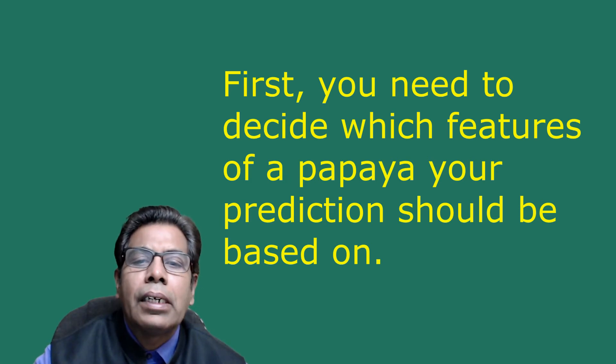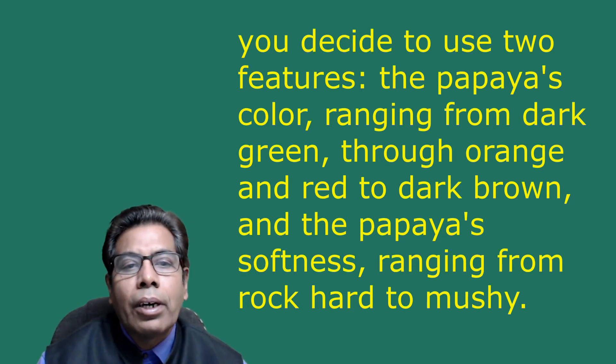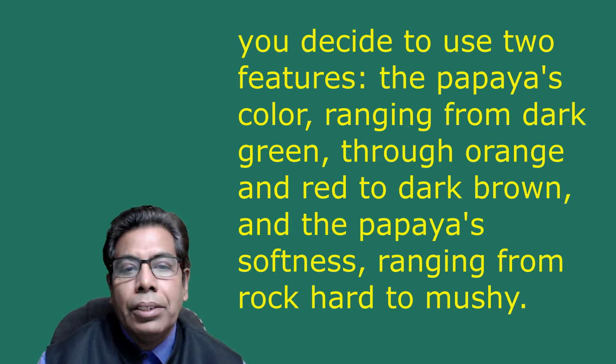With the help of machine learning, first you need to decide which features of the papaya your prediction should be based on. Based on your previous experience with other fruits like mango, you decide to use two features: the papaya's color, ranging from dark green to orange-red to dark brown, and the papaya's softness, ranging from rock hard to mushy. Your input for figuring out your prediction rule is a sample of papayas examined for color and softness and tested for tastiness.